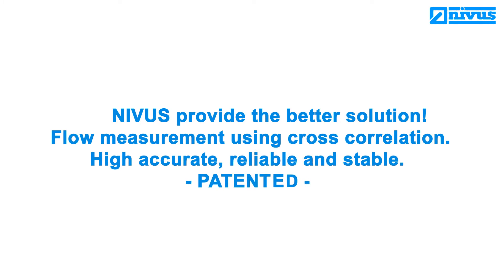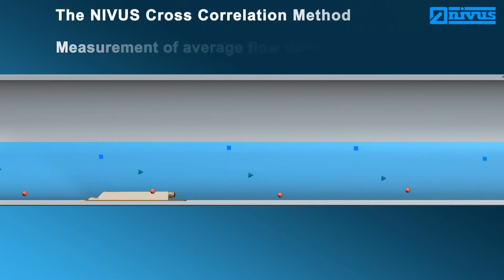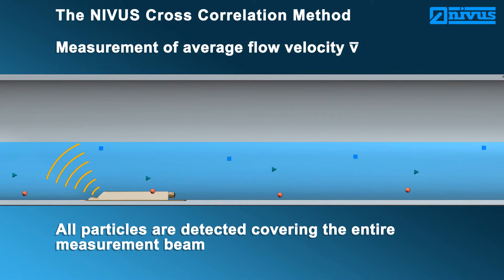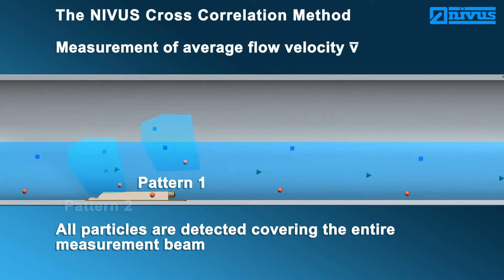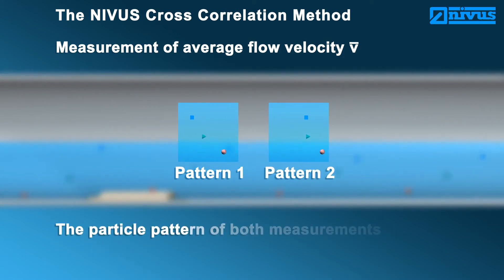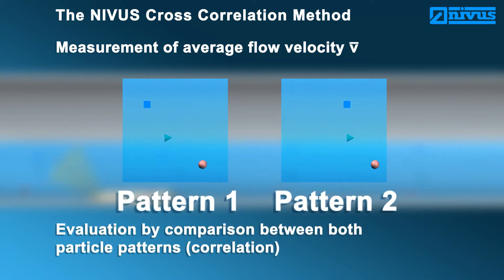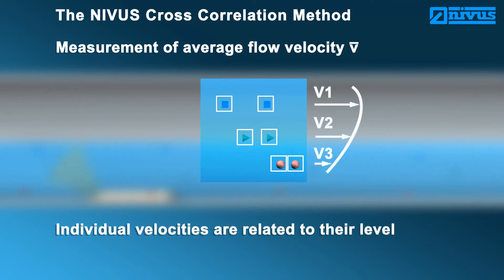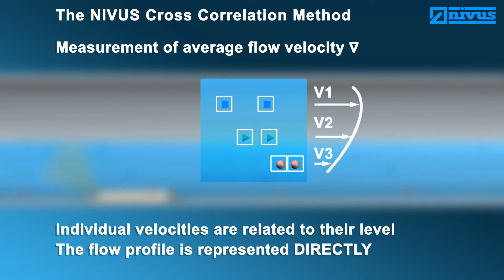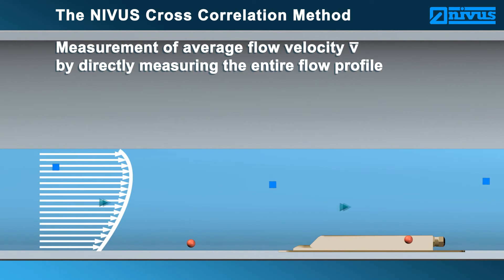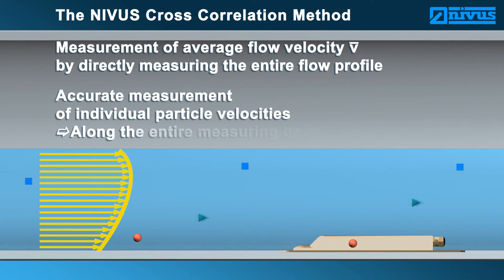NIVUS provides the better solution: flow measurement using cross-correlation — high, accurate, reliable and stable. The NIVUS cross-correlation method is not a spot velocity measurement. Here all particles are detected at the same time, covering the entire measurement beam. The particle images are evaluated by comparing correlation to each other, and this comparison repeats within a few milliseconds. In addition to the individual particle velocities, the relation to the flow level is available, making it possible to represent the flow profile directly. The discrete flow velocities related to the flow level, covering the complete measuring beam, ensures high, accurate flow metering.